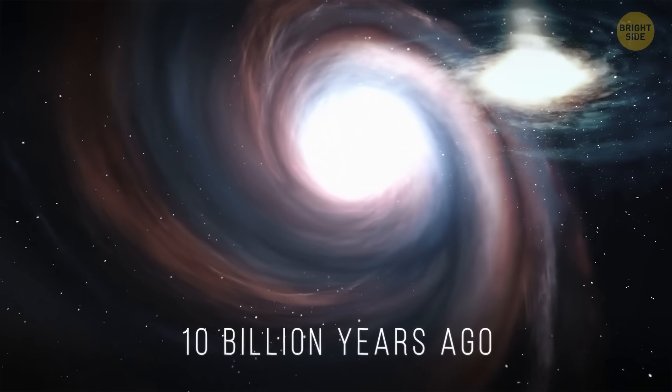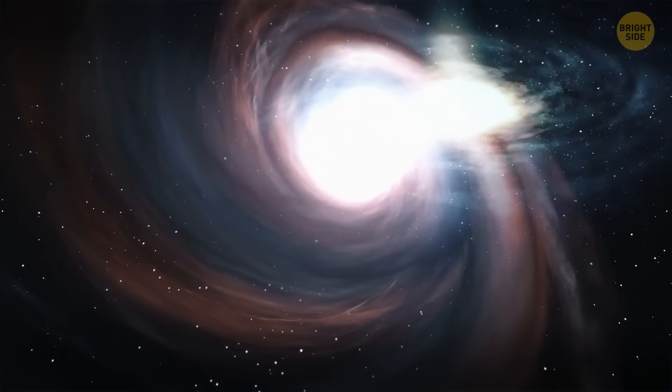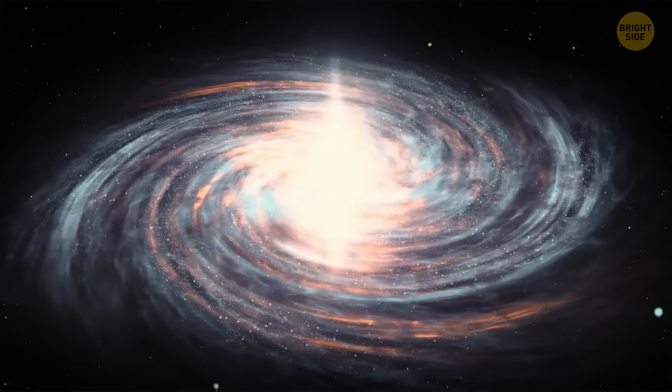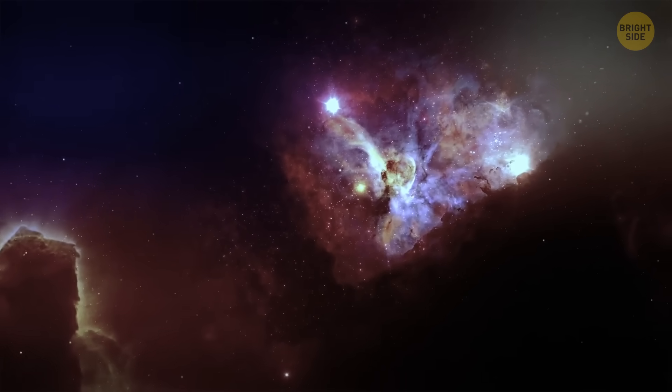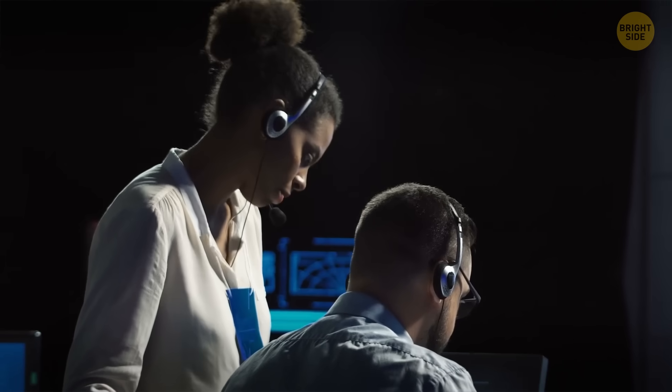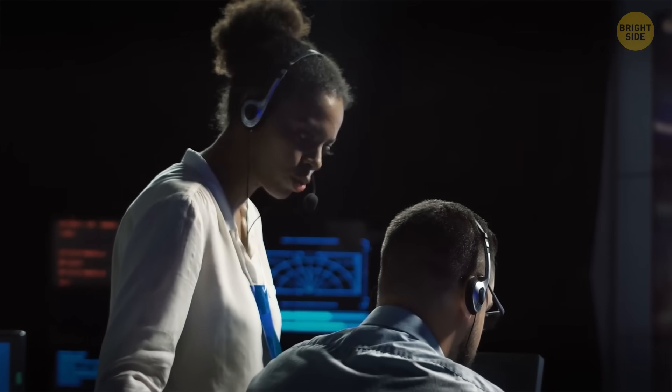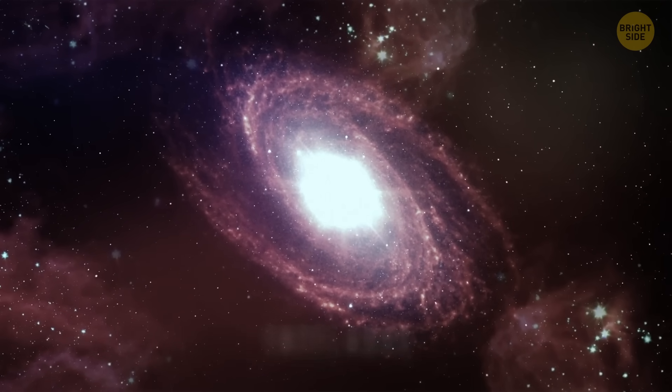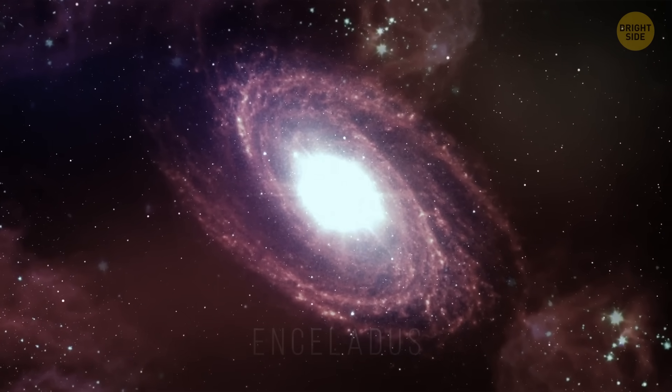Ten billion years ago, our home galaxy also went through a collision. That's why now its halo isn't like the ones other spiral galaxies have. Scientists first thought it was several small collisions, but then they realized that most of these space objects in the Milky Way came from a single source. It was another galaxy, Enceladus, that the Milky Way collided with.